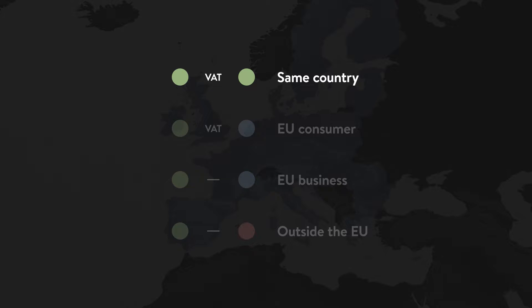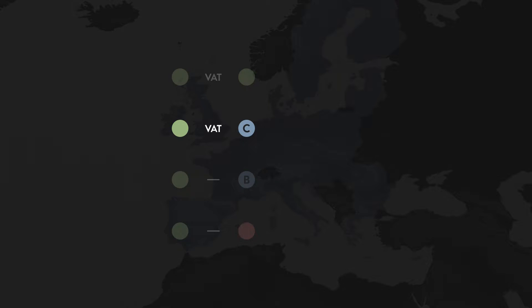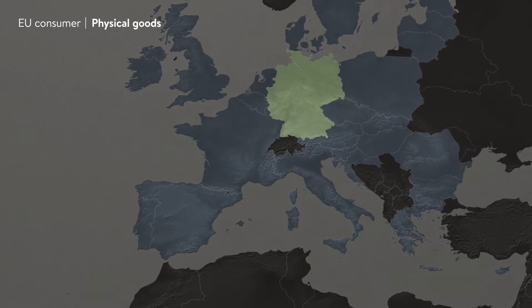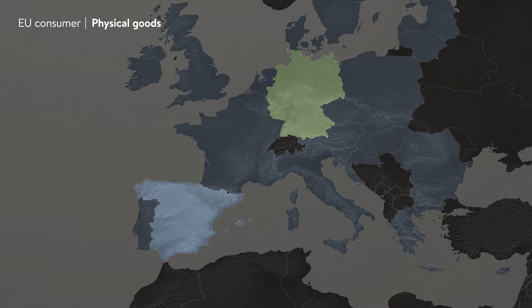Now let's look at which VAT rate applies to which customer. If your customer is from the same country as your store, you have to charge the VAT rate of your country. Setting up tax rates in different countries of the EU can be a little tricky as you need to charge different tax rates for physical and digital goods. Let's start with physical goods. The most common scenario is that you'll be charging the VAT rate of your home country. So if you're based in Germany, for example, and a customer in Spain buys a physical product, you should charge them the German VAT rate.